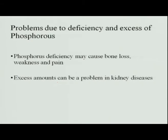Phosphorus deficiency may cause bone loss, weakness and pain. Excess phosphorus may cause kidney diseases and kidney stone formation. Calcium and phosphorus are closely related and must be maintained in a 1:2 ratio — bone strength depends on their combined presence. They are very important minerals that must be consumed through diet.